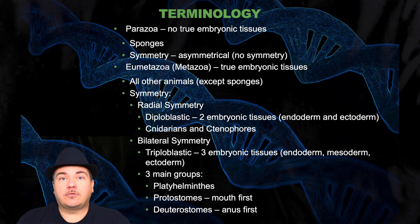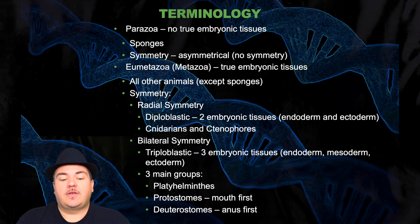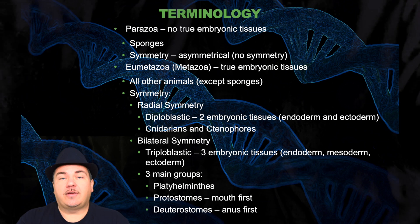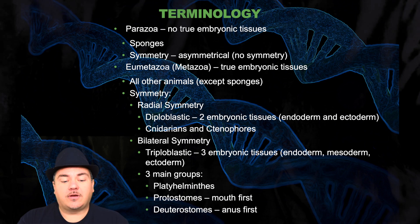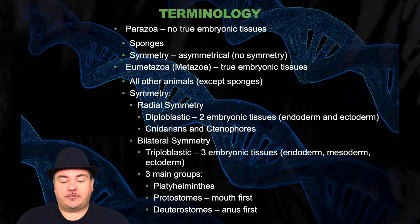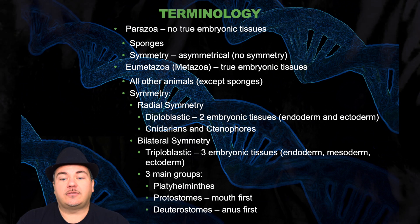Let's cover some terminology that goes along with invertebrates. We have the Parazoa, which means no true embryonic tissues — sponges are in this category. They're asymmetrical, so they don't have any symmetry. Then we have the Eumetazoa, or Metazoa, which means they have true embryonic tissues — this is all other animals. Their symmetry can be radial or bilateral. If they have radial symmetry, they can be diploblastic, meaning they have two embryonic tissues: the endoderm and the ectoderm, but no mesoderm.